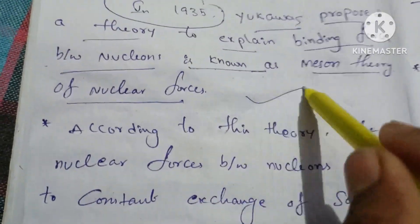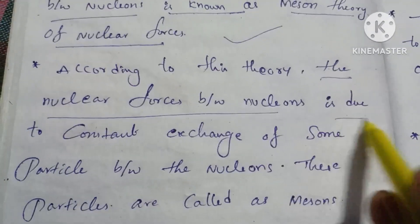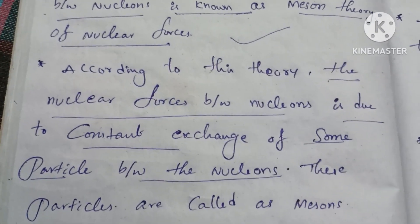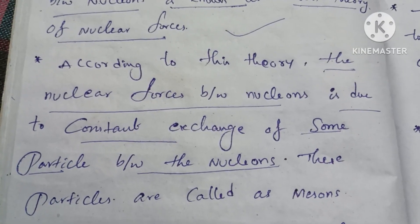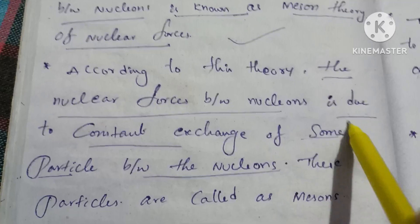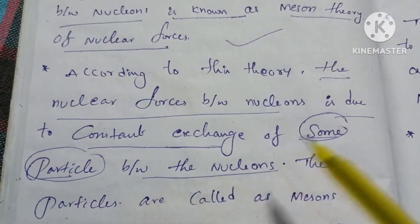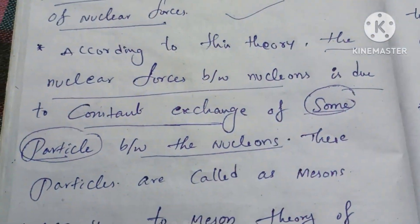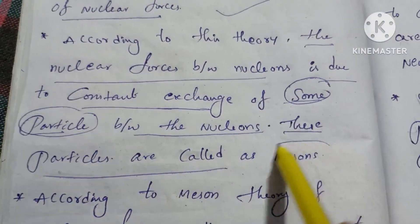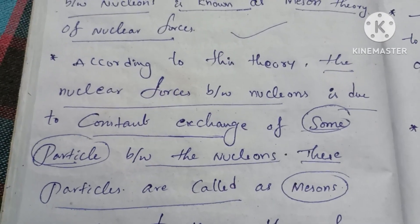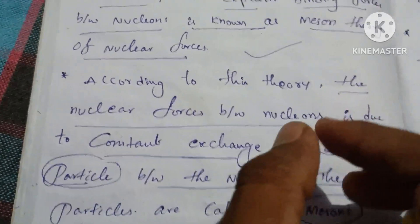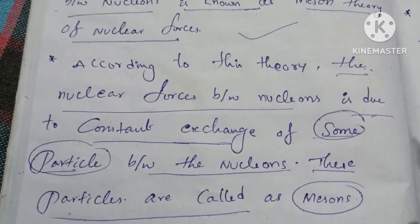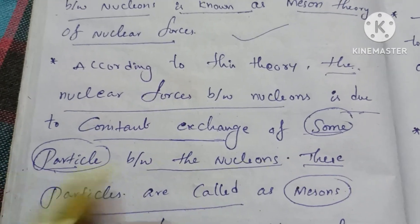According to this theory, the nuclear forces between nucleons are due to the constant exchange of some particles between the nucleons. These particles are called mesons. The nuclear forces between nucleons arise due to this constant exchange.